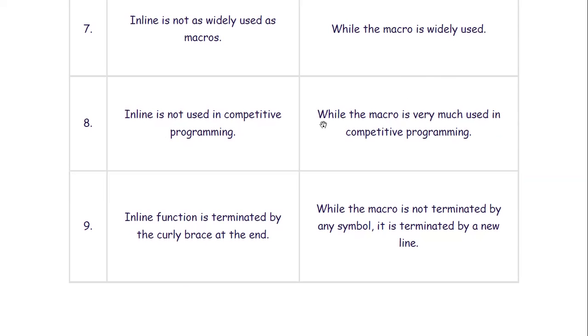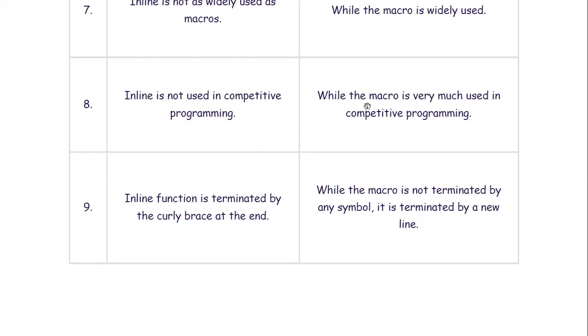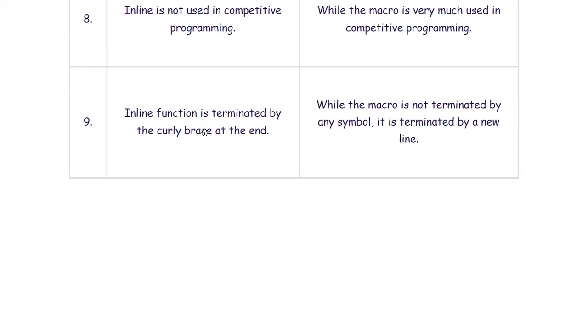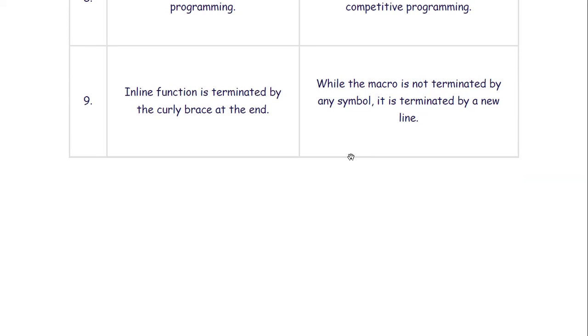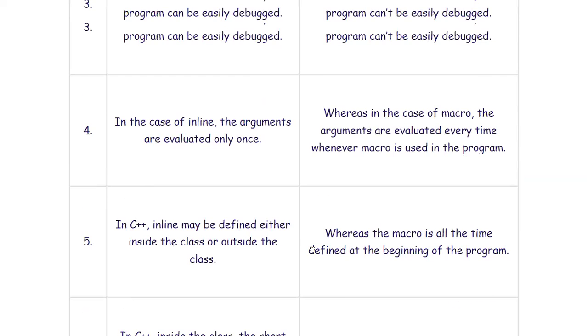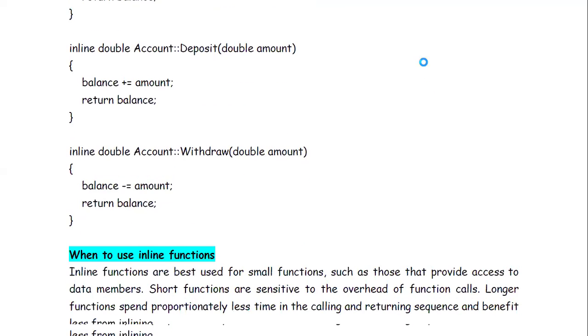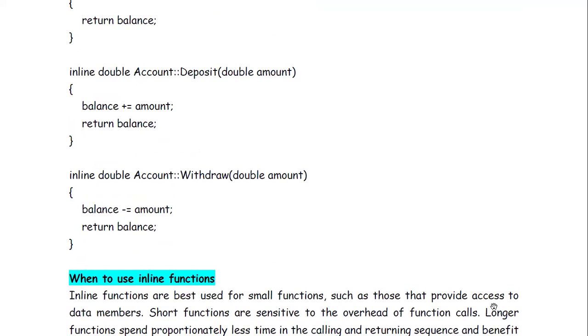Inline function is terminated by the curly brace at the end while the macro is not terminated by any symbol, it is terminated by a new line. So inline can be terminated with curly brace while macro with the help of a new line. So these are the differences between inline function and macro. So I hope it is clear to you, still if any doubt exists then don't forget to ask me. So with this I'm ending this session, thank you, bye bye.